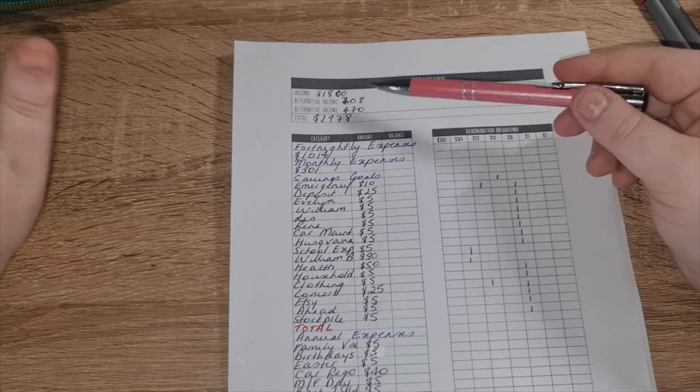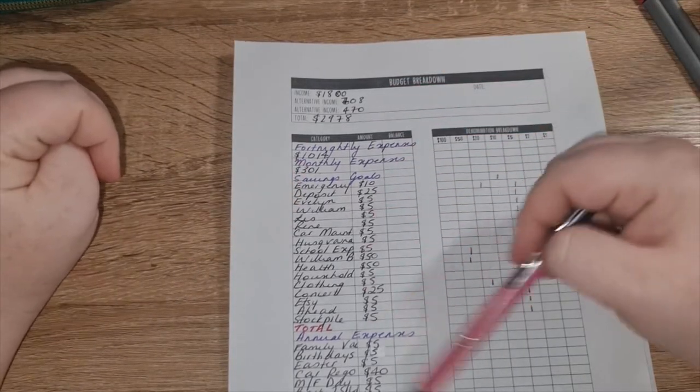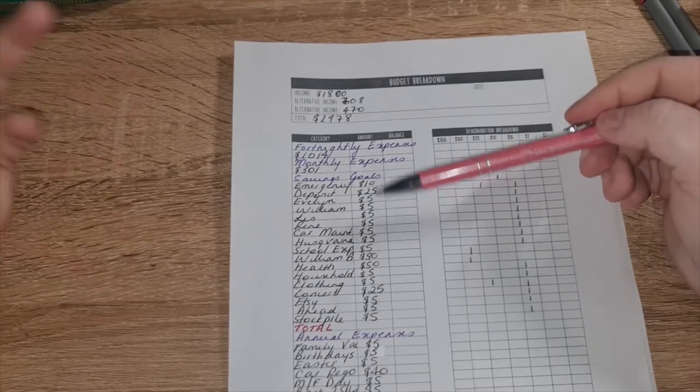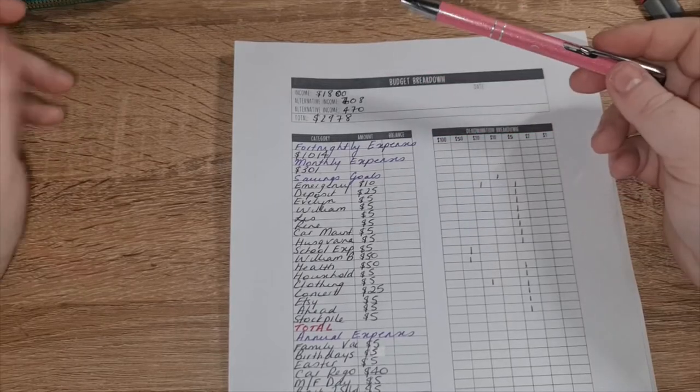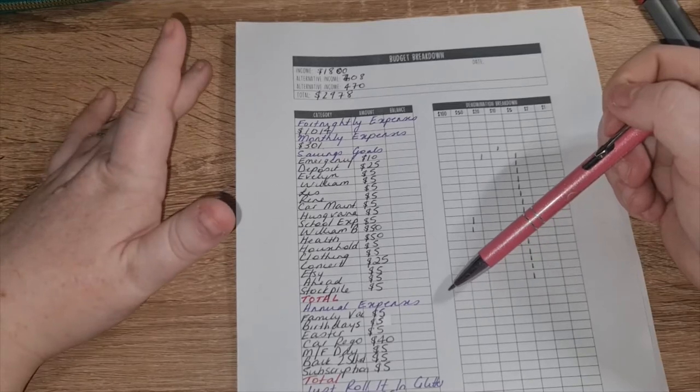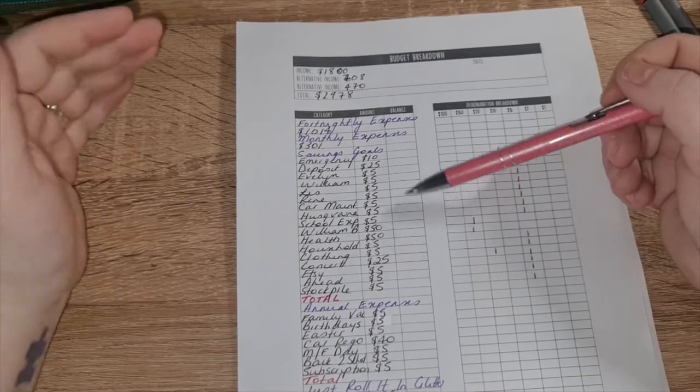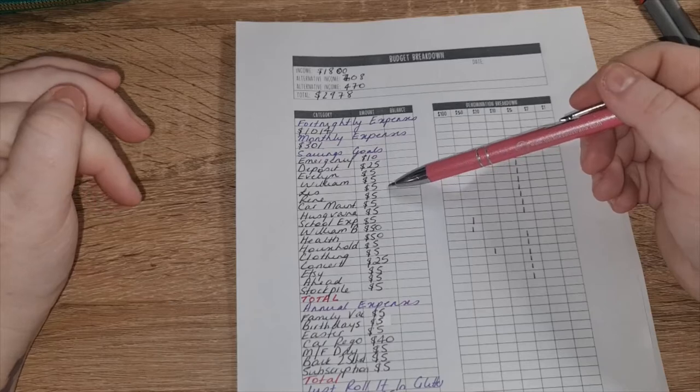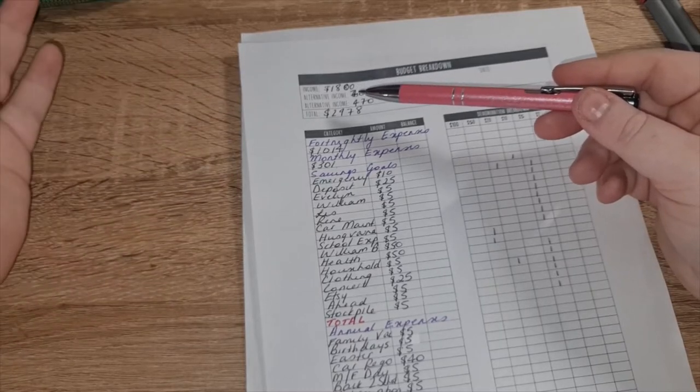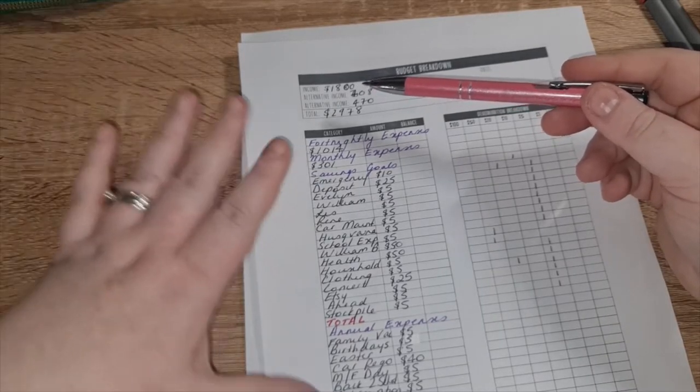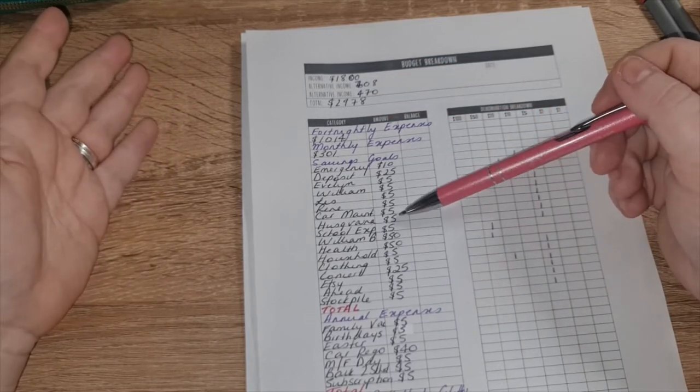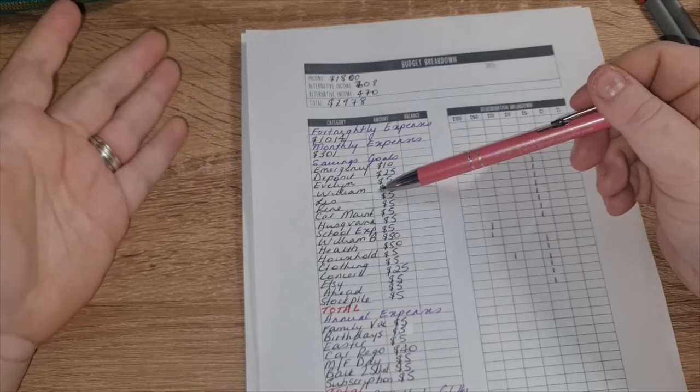I basically cash stuff for all of my savings and all of my annual expenses, things like car registration, birthdays, Easter, Christmas, things like that. So I generally cash stuff five dollars a week and it actually ticks up a lot quicker than what you think it does. So don't be watching all of these cash stuffing videos and think that you have to cash stuff hundreds and hundreds of dollars into a single envelope. If that works for your budget great, if it doesn't cash stuff a dollar, cash stuff five dollars, one dollar, fifty cents, whatever suits your budget.